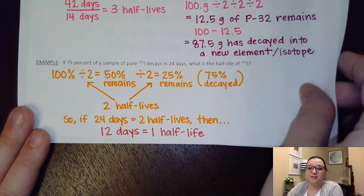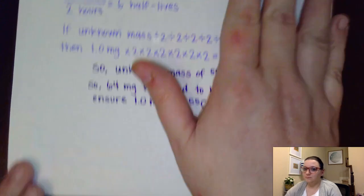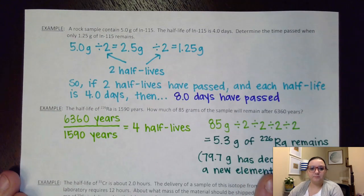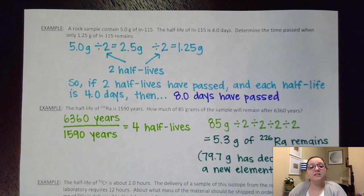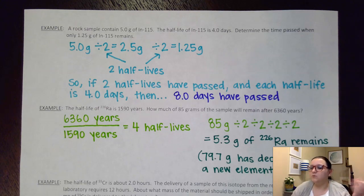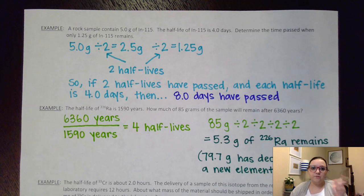Let's flip the page and look at some other problems. Our next question says, a rock sample contains 5 grams of indium-115. The half-lifetime is 4 days. Determine the time past when only 1.25 grams remains. I'm being asked about time past, which means I probably want to use the masses to figure out my half-lives.